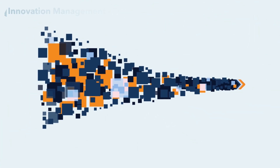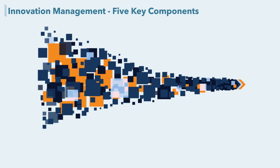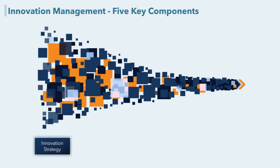This innovation management system presents five key components: innovation strategy, front-end of innovation, portfolio management, development, and launch. Innovation strategy is the first component and the foundation of the system. It quantifies the objectives for innovation, defines areas of focus, and specifies an implementation plan. Following the innovation strategy comes the front-end of innovation.